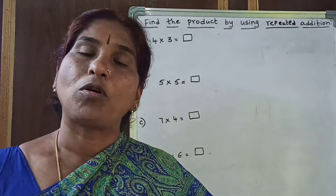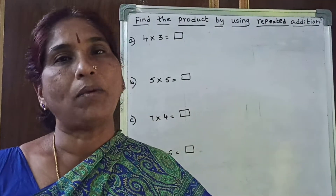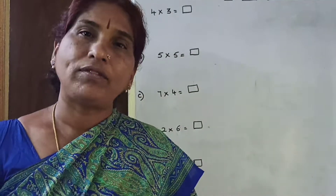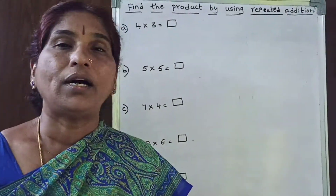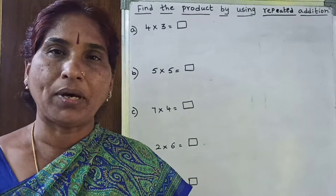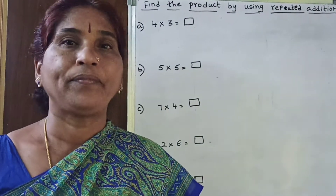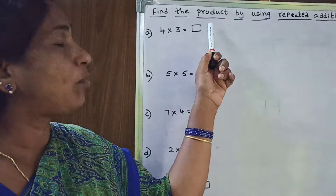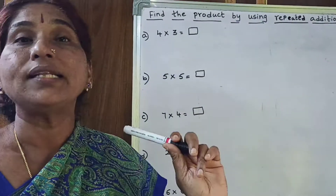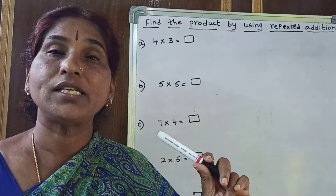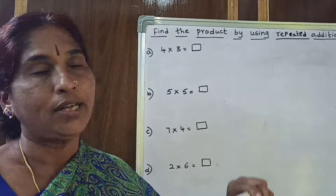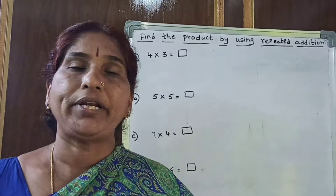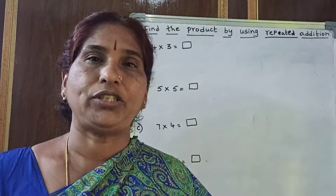Already you have learned properties of multiplication, and then you have learned multiplication on the number line. Today we are going to learn how to find the product. The answer in multiplication is called the product. So we will find the product by using repeated addition.